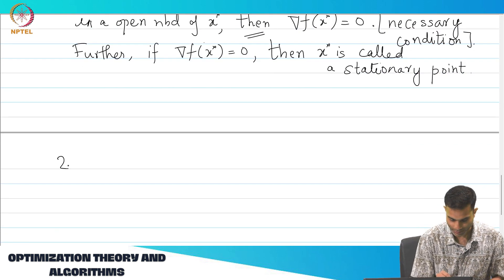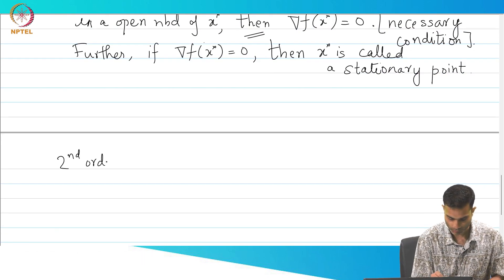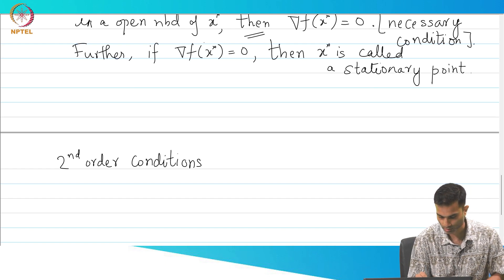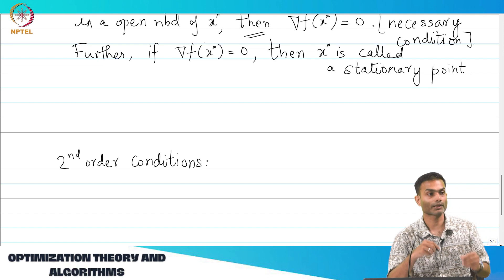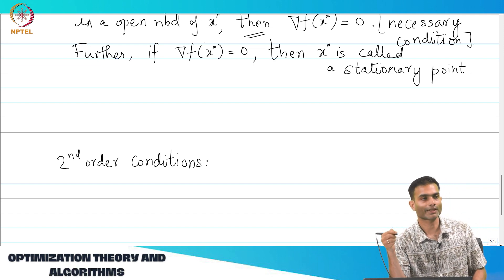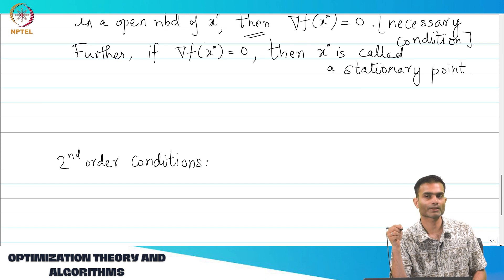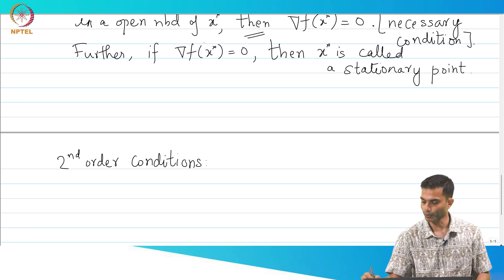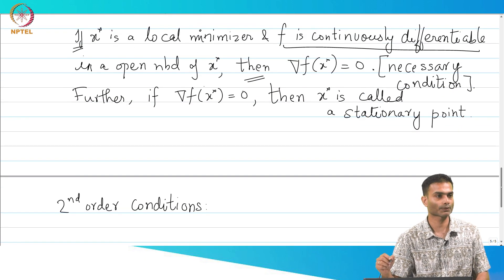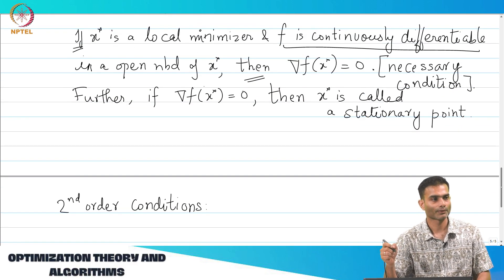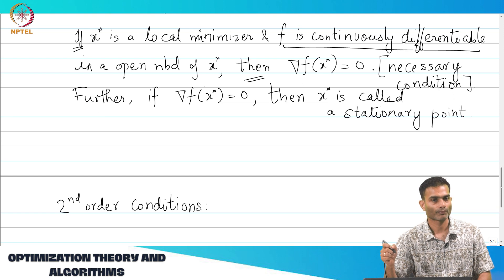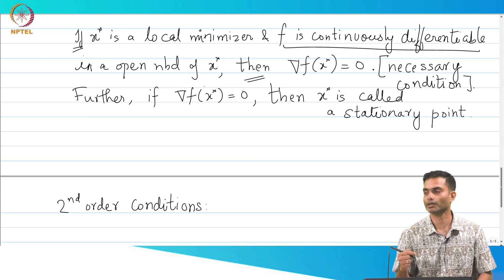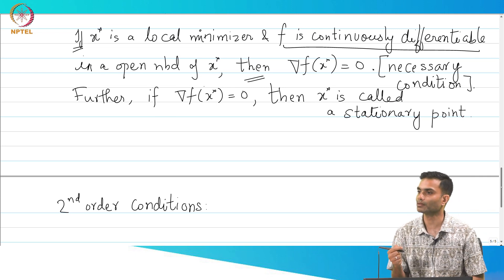So, now let us note down our second order. These are conditions for what? For checking whether the point x* I have got is a local minima or not. And why do we need a second order condition? Can someone point out looking at this page? Because I have only got a necessary condition, I have not got a sufficient condition. So, the second order condition is actually what is going to give me a sufficient condition.